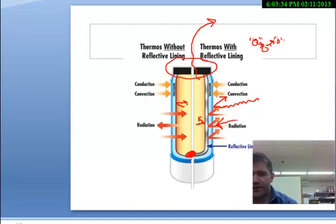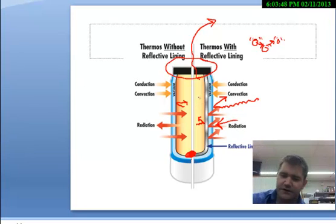So three things. They prevent convection by sealing it off. They prevent conduction by either using materials that are good insulators and poor conductors or by actually creating a vacuum around the inside of this thing. And they prevent radiation with shiny surfaces.